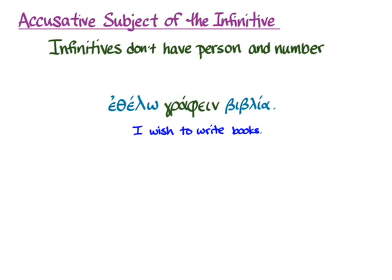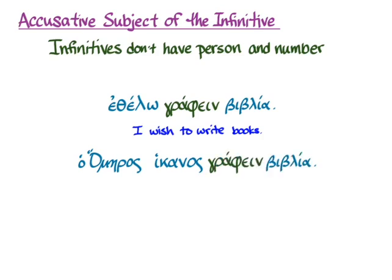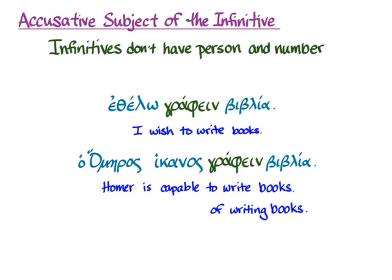Infinitives also complete the meaning of some adjectives, and we've used it in situations like this: 'Homer is capable — hikanos — to write books,' or we might say in better English, 'capable of writing books.' In that instance too, it's just the idea of writing that the infinitive is getting across, and we're not focused on who's doing it. Infinitives are verbal nouns, so they don't have person and number.